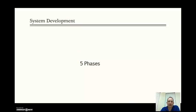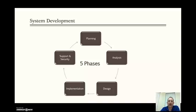There are typically five phases to system development. The first one being planning, then analysis, then design, implementation, and finally support and security. In addition to these, there's also several other ongoing activities such as project management, feasibility assessment, documentation, and data and information gathering. And we'll actually go further into detail on these items later on in the presentation.